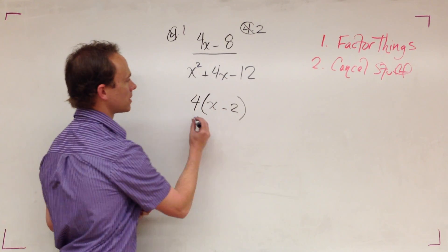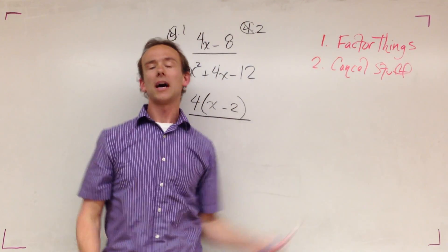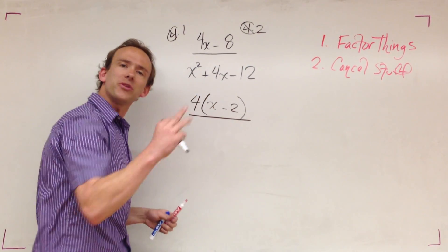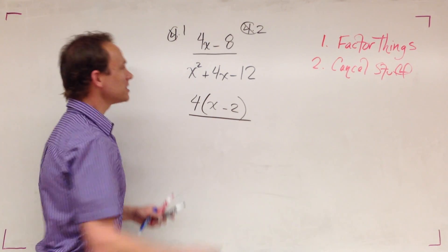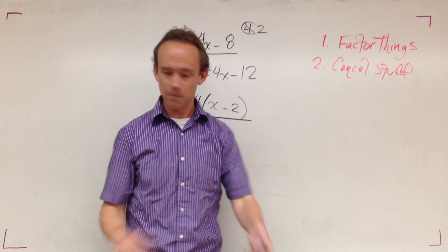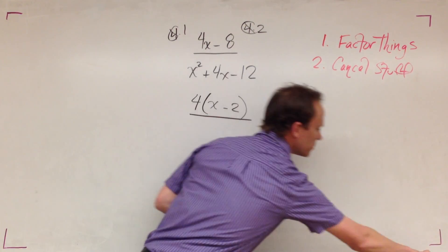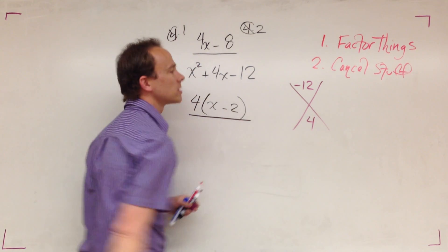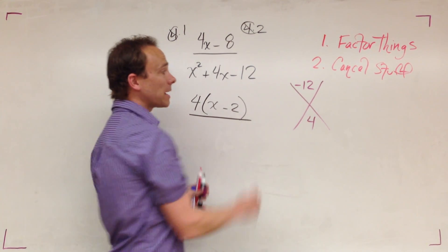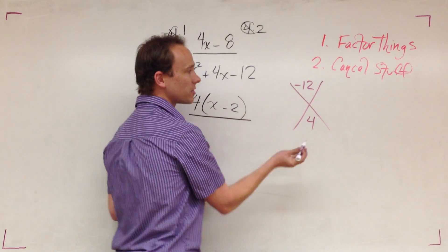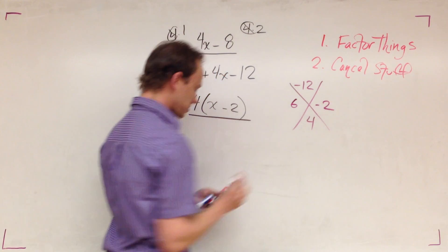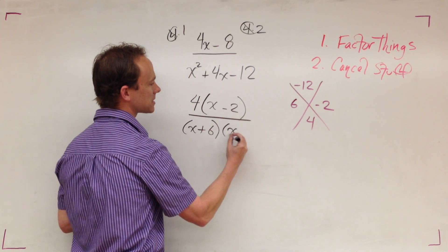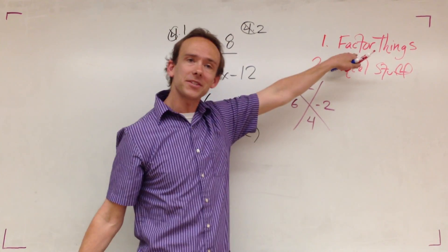Onto the denominator. By factor things I mean factor the numerator and factor the denominator if possible. This is a trinomial, it's got three terms - one, two, three. Every time we see that we use x marks the spot. Negative 12 goes on the top, 4 goes on the bottom. I need two terms that multiply to give me negative 12, add to give me positive 4. Those two terms are 6 and negative 2, so I got x plus 6, x minus 2.